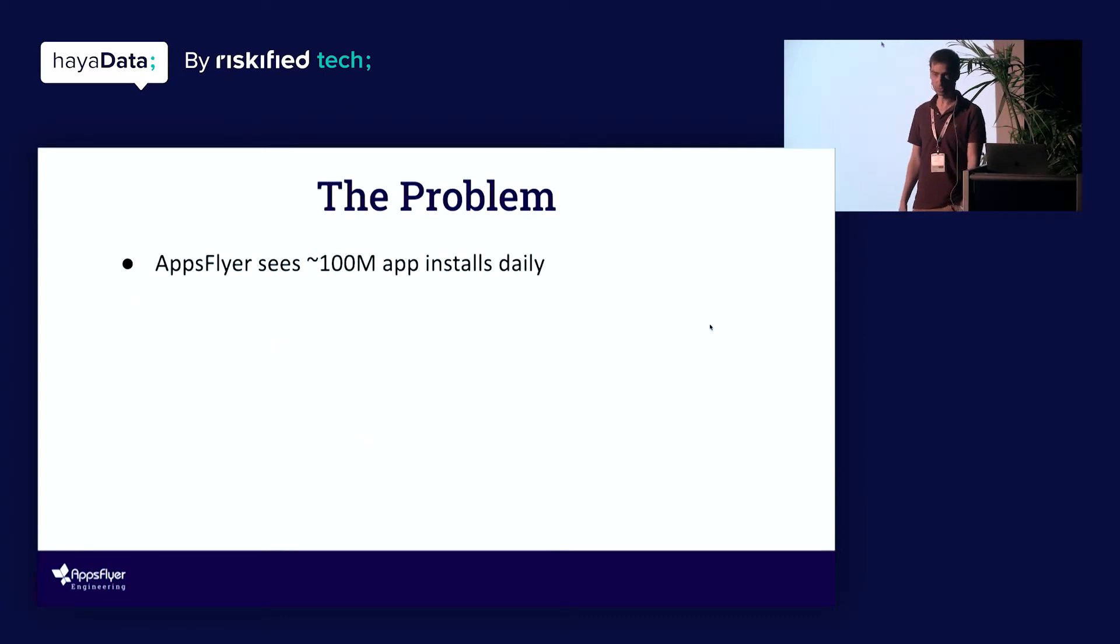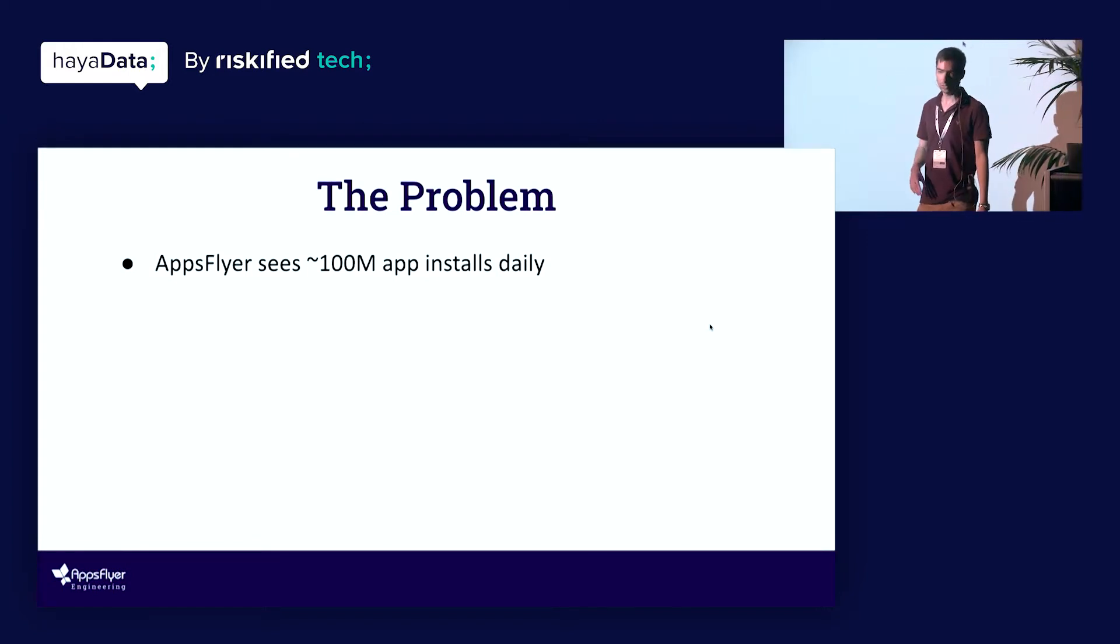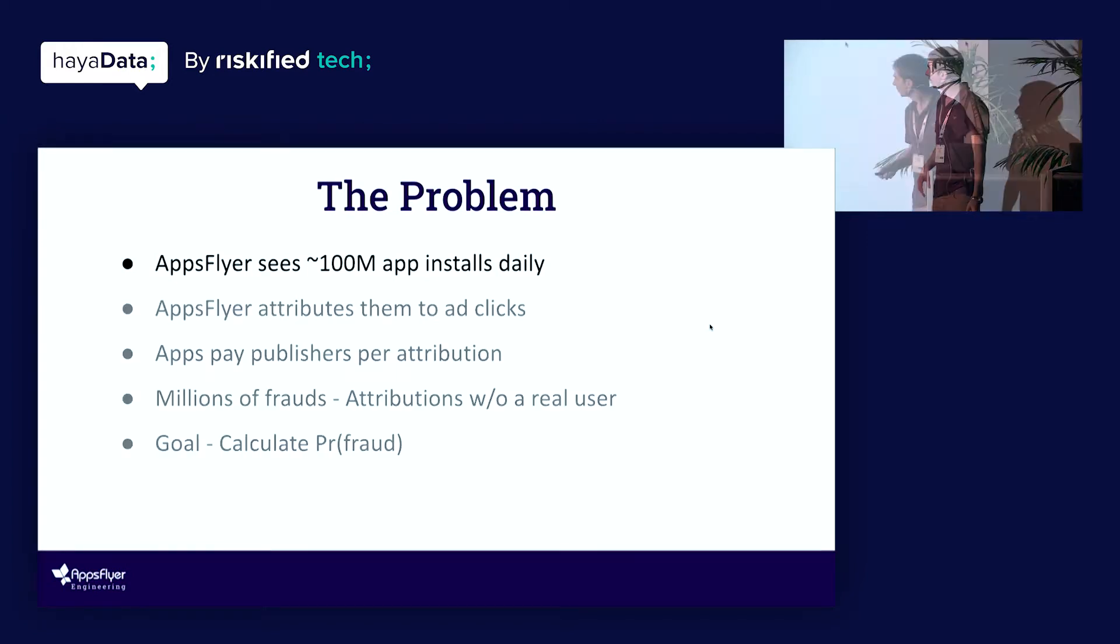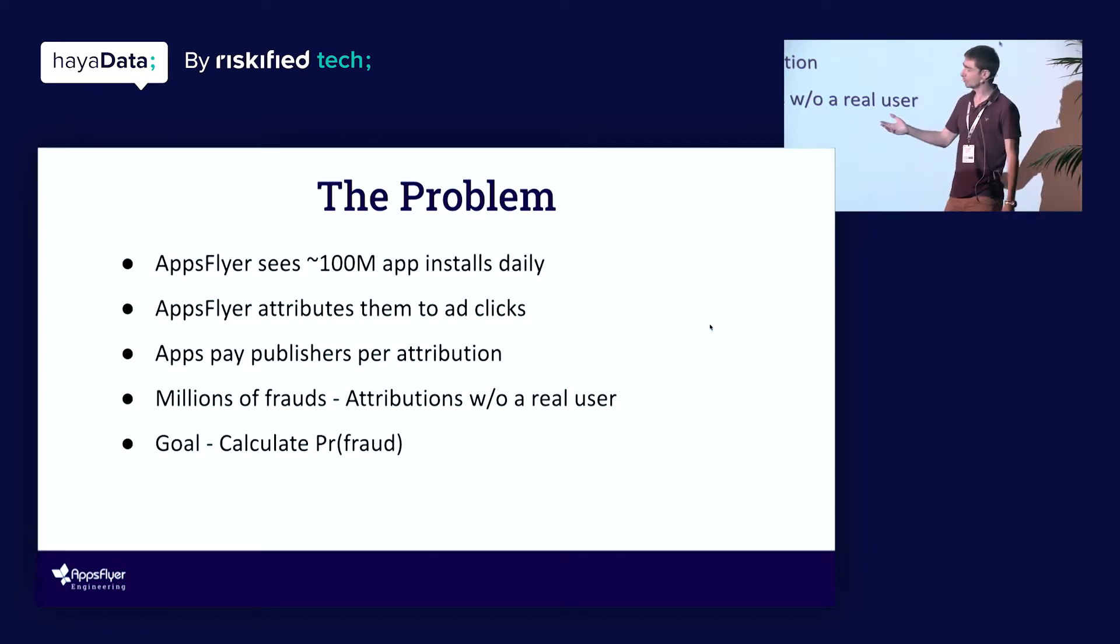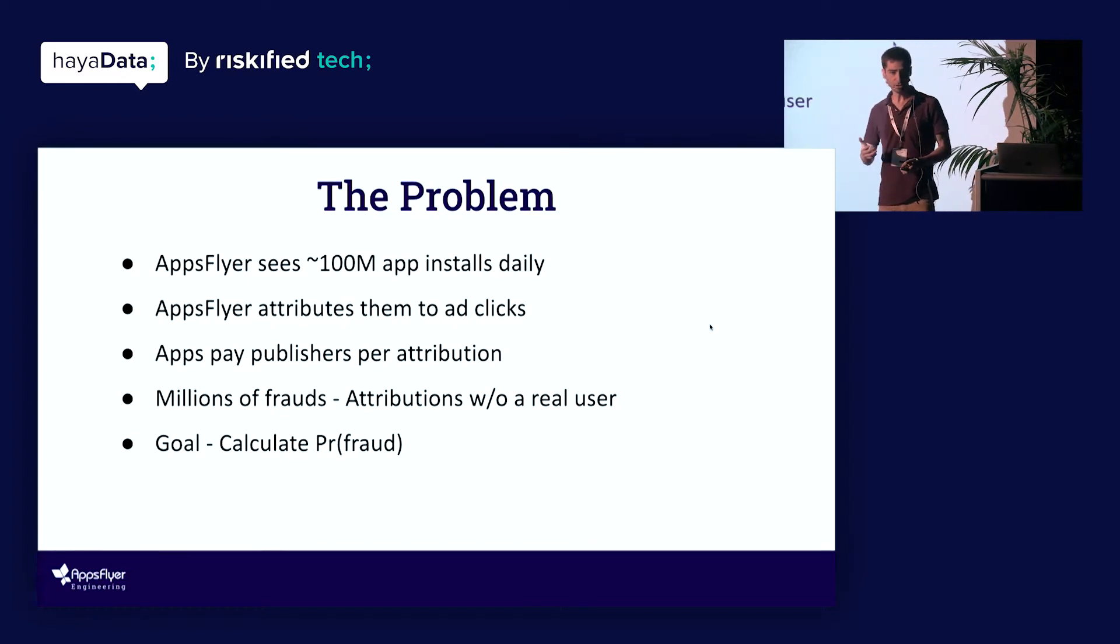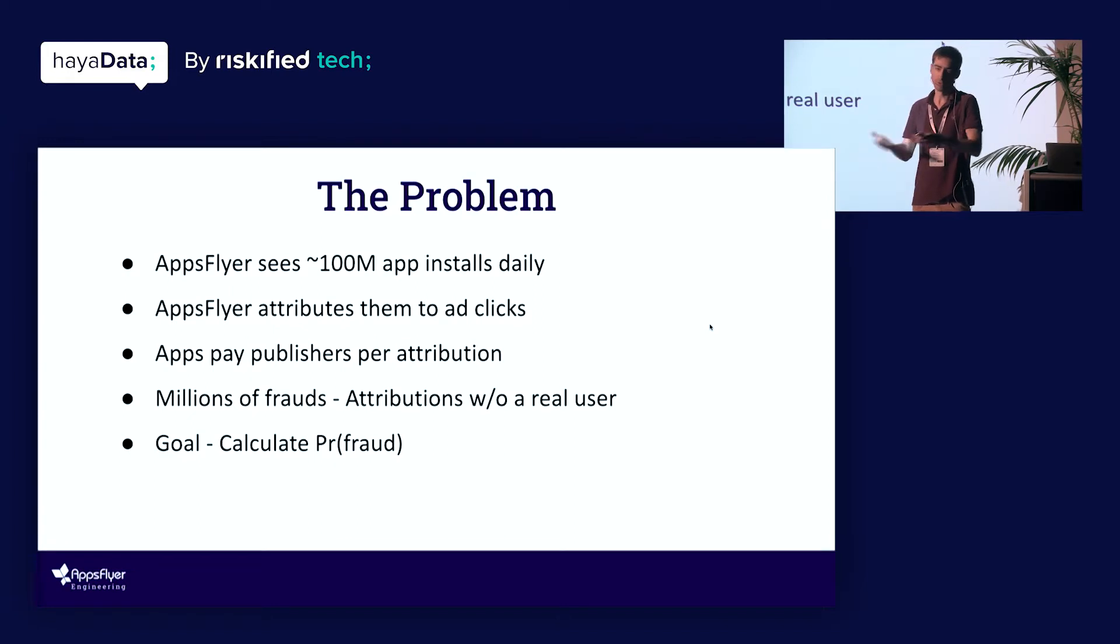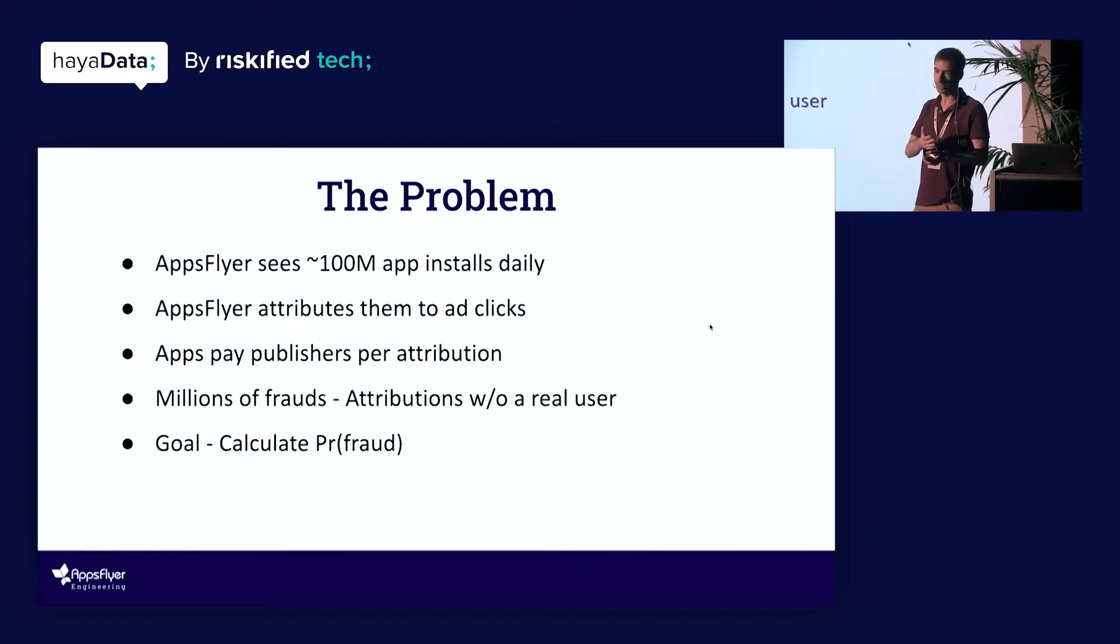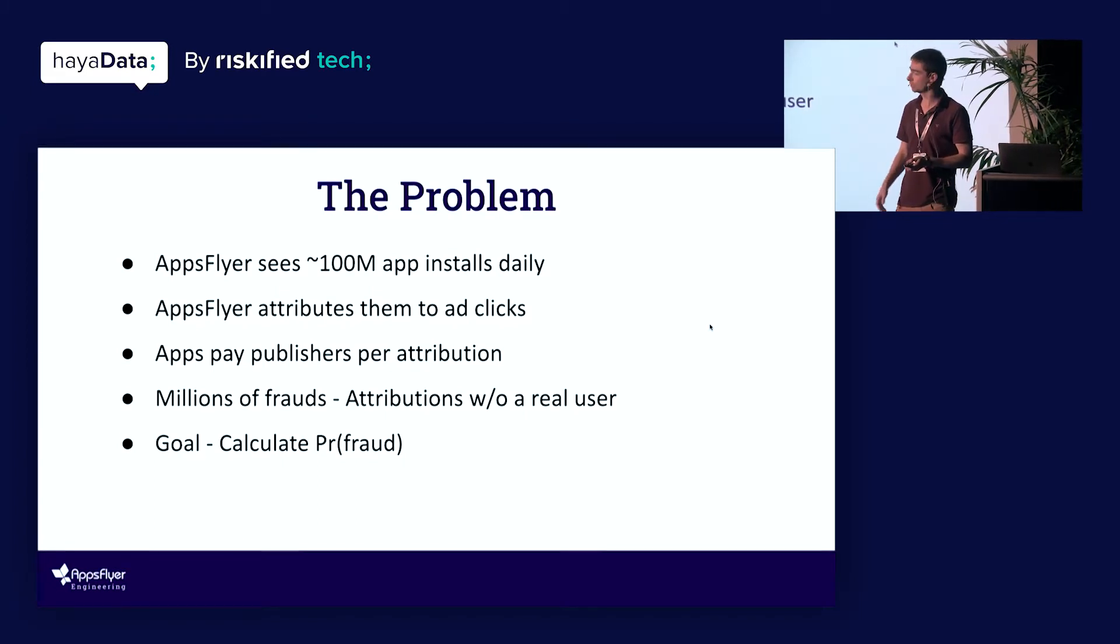We'll start off from the problem. AppsFlyer sees about a hundred million application installs every day. We get these application installs and then we want to attribute these application installs to ad clicks. Now, applications pay a lot of money to publishers for their attributions. AppsFlyer is actually kind of a neutral third party in this scenario where we judge between the app and the publisher how much money they owe them according to how many attributions we say that they got from this publisher. So we need to figure out the correct number of attributions. That's our business, really.